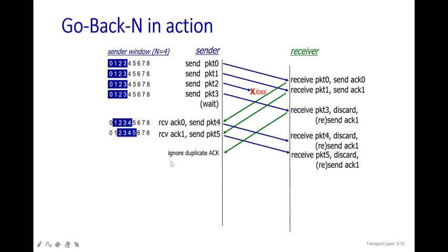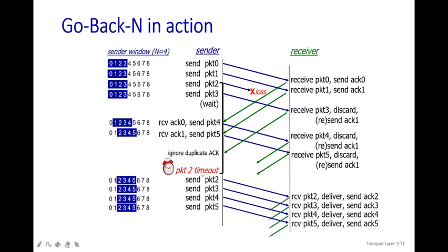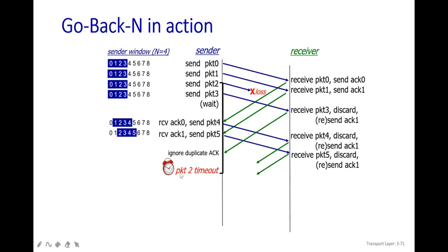The sender must ignore all duplicate acknowledgements. Packets four and five have been received but only partially — the acknowledgement never fully arrives because packet two was lost. The time allotted for each packet then expires. The timeout occurs, and the sender determines that packet two was lost because acknowledgement two was never received — only acknowledgement one kept arriving.